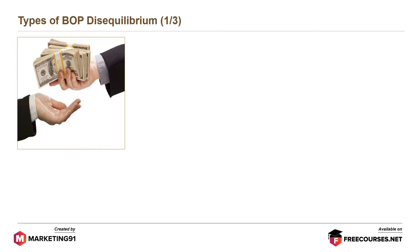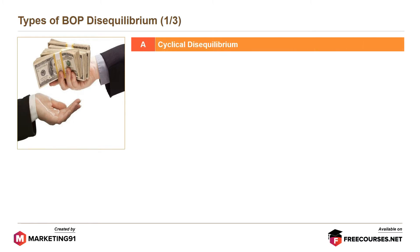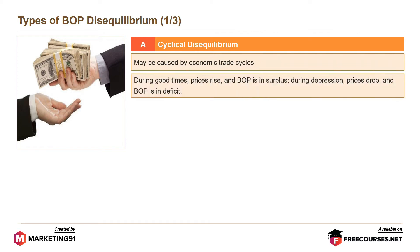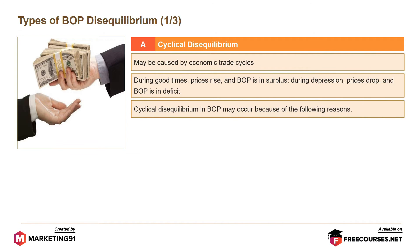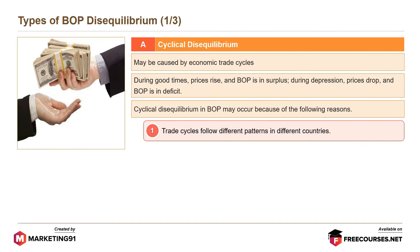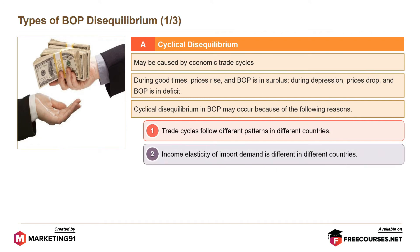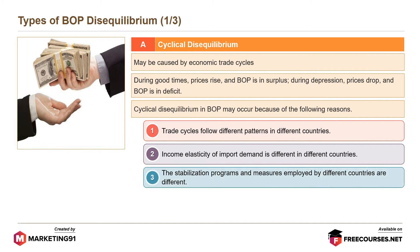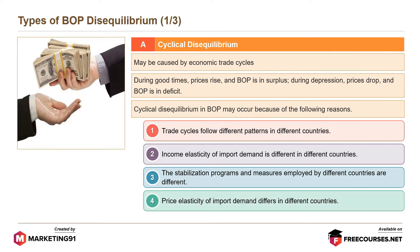The types of BOP disequilibrium are as follows. The first is cyclical disequilibrium, which may be caused by economic trade cycles. During good times, prices rise and BOP is in surplus; during depression, prices drop and BOP is in deficit. Cyclical disequilibrium may occur because trade cycles follow different patterns in different countries, income elasticity of import demand differs, stabilization programs vary, and price elasticity of import demand differs across countries.